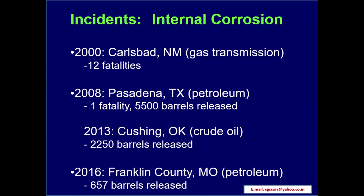Notable incidents of internal corrosion: 2000, Carlsbad New Mexico gas transmission — 12 fatalities; 2008, Pasadena Texas petroleum — 1 fatality, 5500 barrels released; 2013, Cushing Oklahoma crude oil — 2250 barrels released; 2016, Franklin County Missouri petroleum — 657 barrels released.